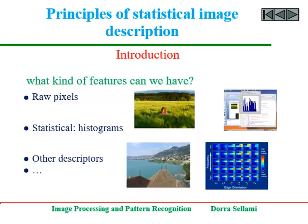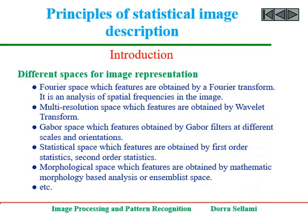What kind of features can we have? Some features can be extracted from a raw pixel description. Statistical description, such as histogram, is very simple and can be pertinent for discriminating objects. Many other descriptors can be useful for generating discriminatory features. Different features can be defined with respect to different spaces considered for image description. Indeed, an extracted feature is rather a representation of the information in a different space.